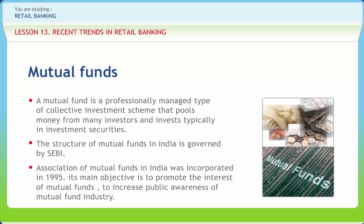The aim of a growth fund is to provide capital appreciation over the medium to long term. Income-oriented funds aim to provide regular and steady income to investors, and invest generally in fixed income securities such as bonds, corporate debentures, government securities and money market instruments. Balanced funds aim to provide both growth and regular income by investing in both equities and fixed income securities. Money market or liquid fund schemes invest exclusively in safer short-term instruments such as T-bills and certificates of deposit. Index funds seek to replicate the returns generated by an index. Gilt funds invest exclusively in government securities, and NAV of these schemes fluctuates due to changes in interest rates and other economic factors.